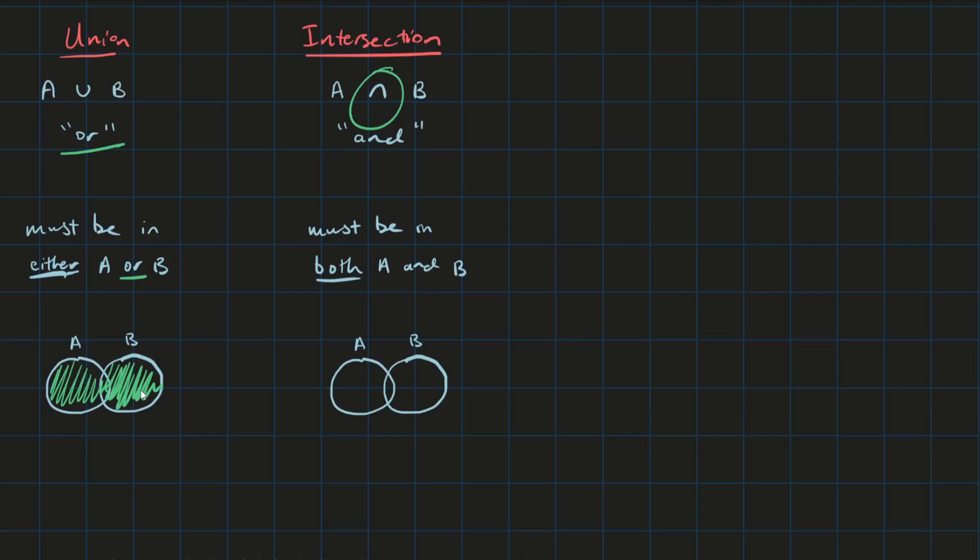The union in this case is both of the circles colored together. Obviously it includes the intersection as well, because if something is part of both A and B, then it's included in either A or B.